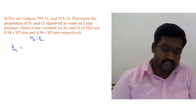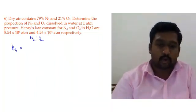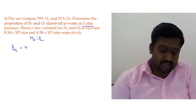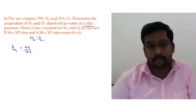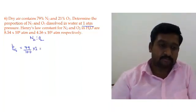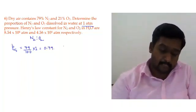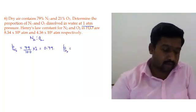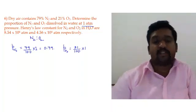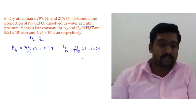Partial pressure is calculated as mole fraction × total pressure. Total pressure is 1 atmosphere. Partial pressure of N₂ = 79/100 × 1 = 0.79 atm. Partial pressure of O₂ = 21/100 × 1 = 0.21 atm.